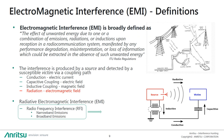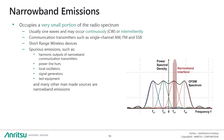We usually divide RFI into two categories: narrowband and broadband emissions. Narrowband emissions occupy a very small portion of the radio spectrum; they are very often sine waves and may occur continuously or intermittently. Other sources are transmitters such as single channel AM, FM, and single sideband, and various short-range wireless transmitters. Also very common are spurious emissions from sources such as harmonic outputs from narrowband communications transmitters, power line hum, local oscillators, signal generators, and various test equipment.